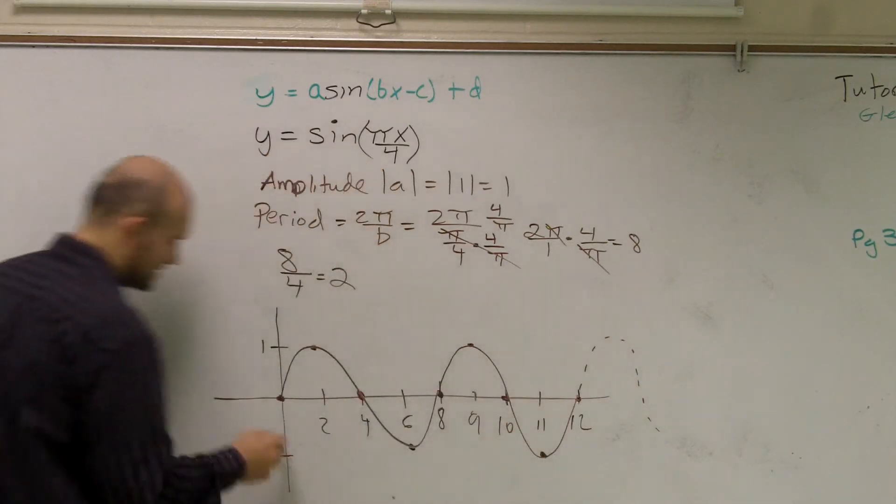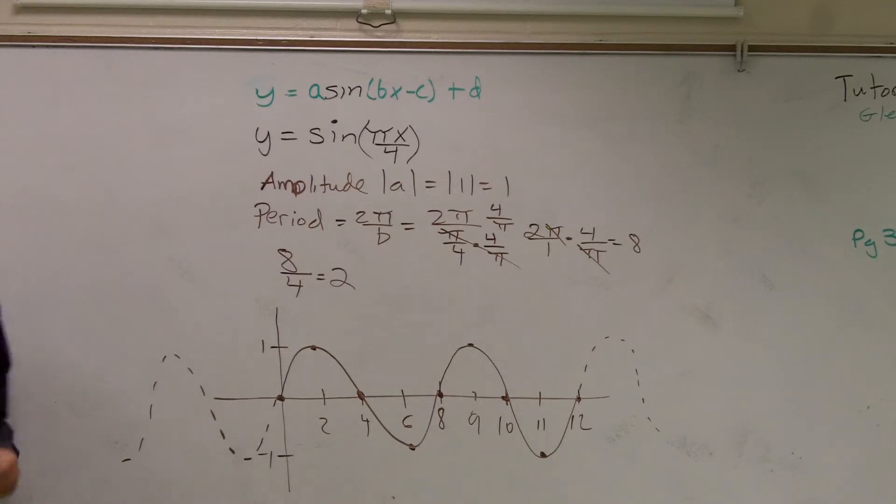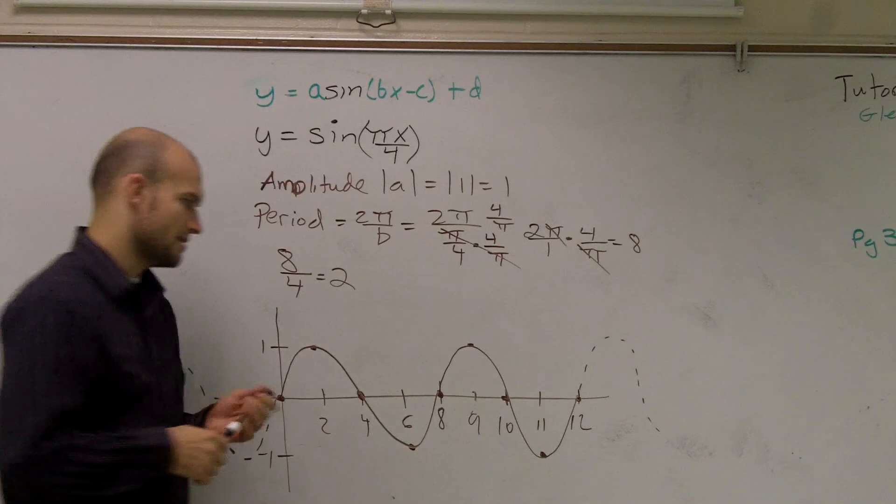And remember, the graph goes infinitely to the right and to the left, completing the exact same cycle. Oh, yeah, I know this is going to sound kind of stupid, but why are you going 2, 4, 6, 8, and then 9, 10, 11, 12?